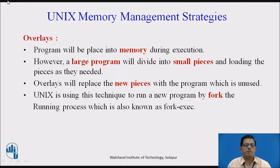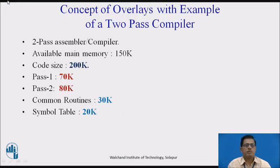Now we will see the concept of overlays with an example of a two-pass compiler. Here, a two-pass compiler or assembler has available memory of 150k and a code size of 200k. Pass 1 occupies 70k memory, Pass 2 occupies 80k memory, and the common routine driver occupies 30k.